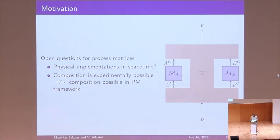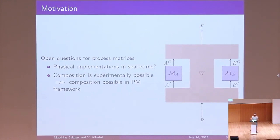The second question we had is about composition. It turns out that composition doesn't work very well in the process matrix framework. If you imagine having two process matrices and implementing them in a lab, you can compose them in the lab in a way that you cannot compose them within the process matrix framework. We were wondering if we can somehow recover this behavior that we would expect in a lab within the mathematics of the framework.